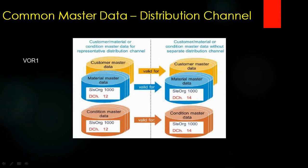For example, in customizing you can make distribution channel 12 a representative channel, so its data can be used by distribution channel 14. If you maintain data for sales org 1000 and distribution channel 12, it can also be used by distribution channel 14. This applies to both the material master and the condition master — there are two separate things: pricing conditions and customer/material master records.